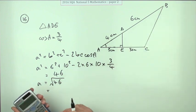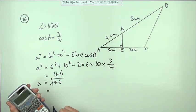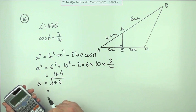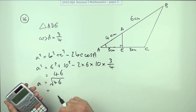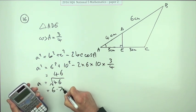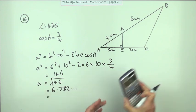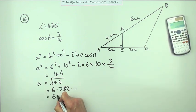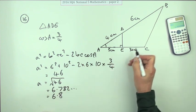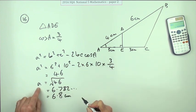Square root of 46 - that's that wee button, useful sometimes. It said to one decimal place, so 6.8 centimeters. That was the length of BC.